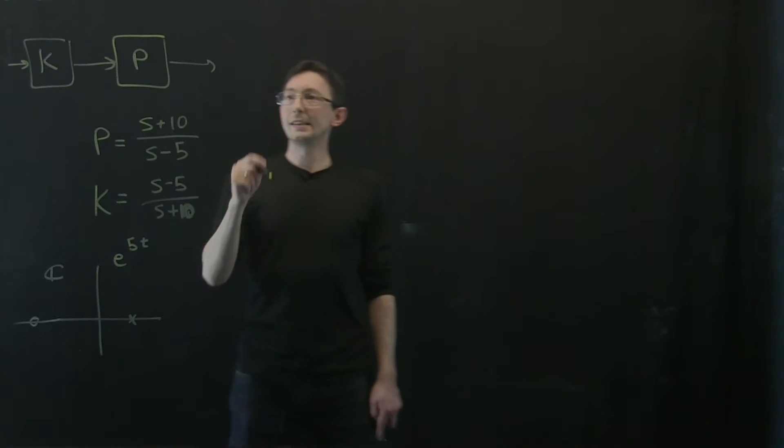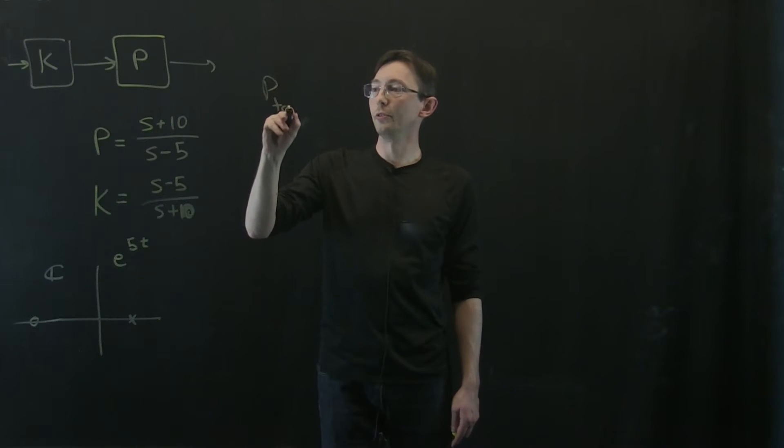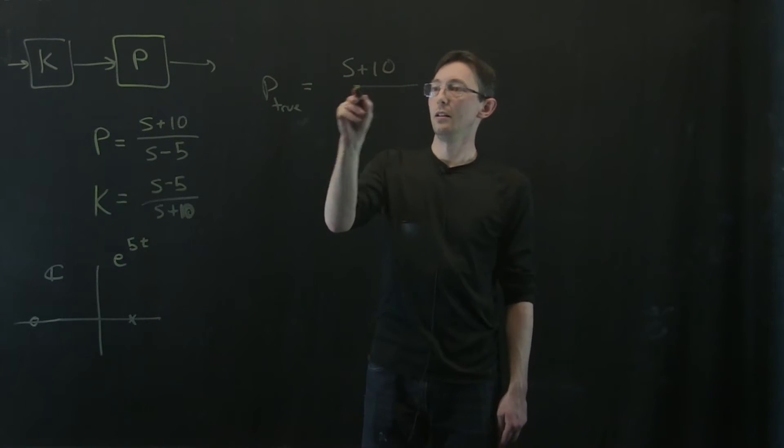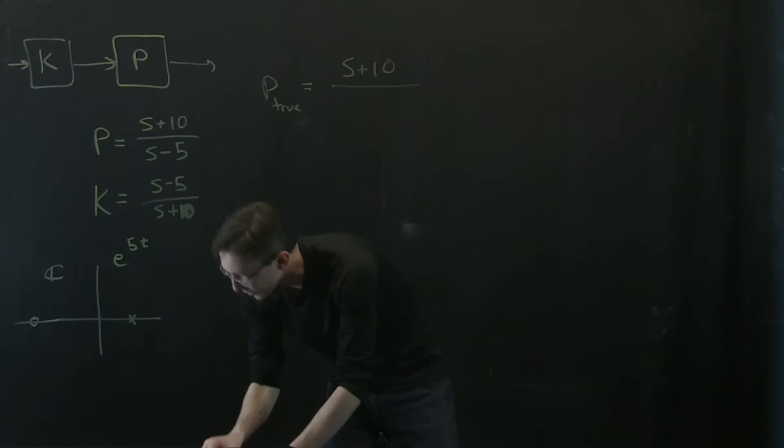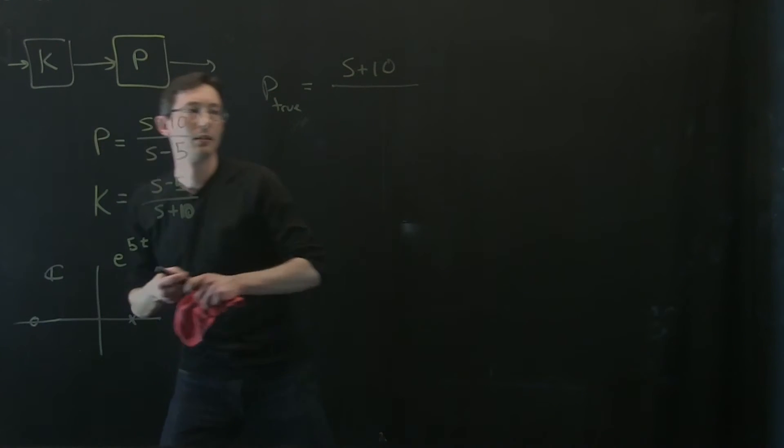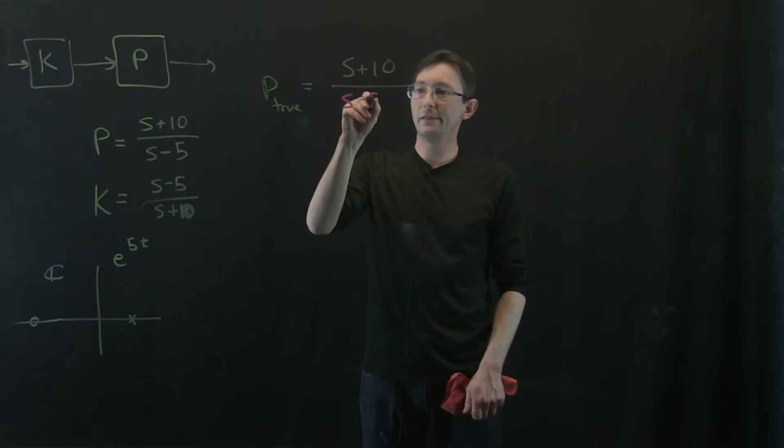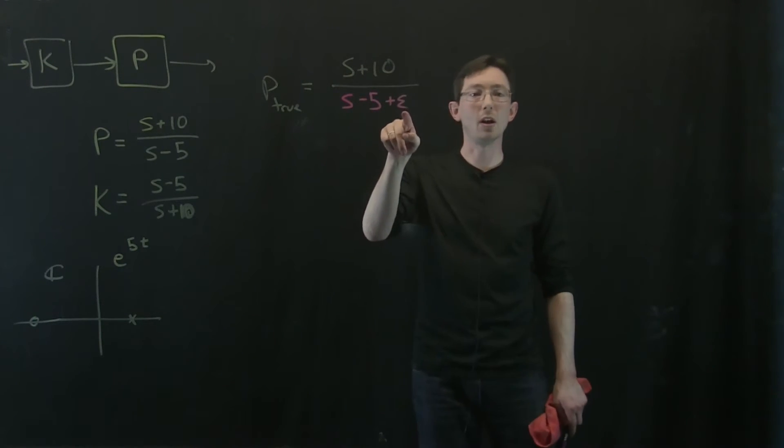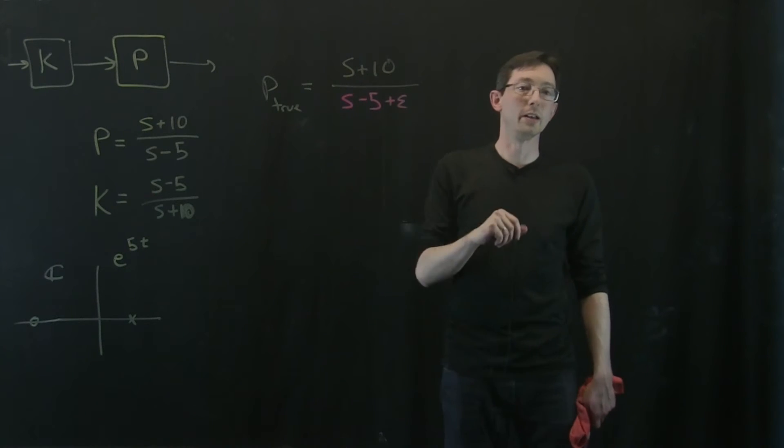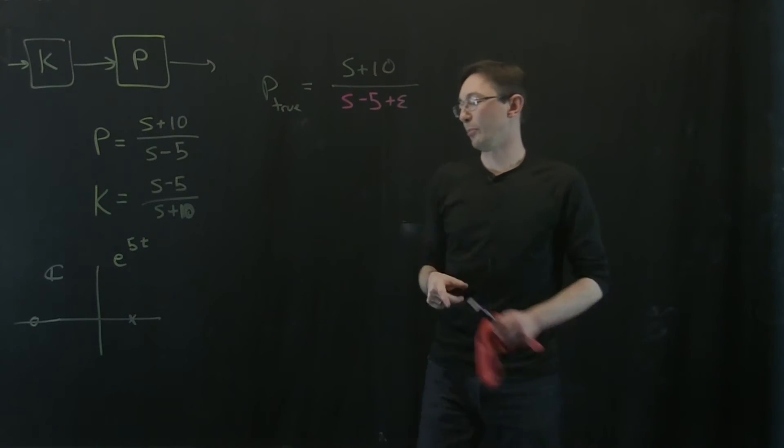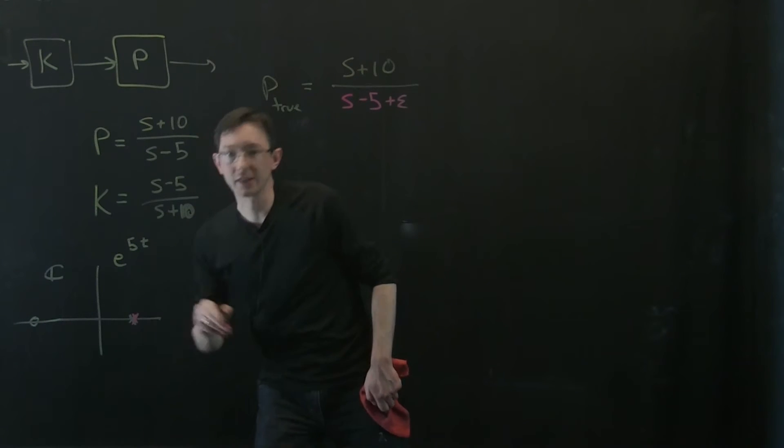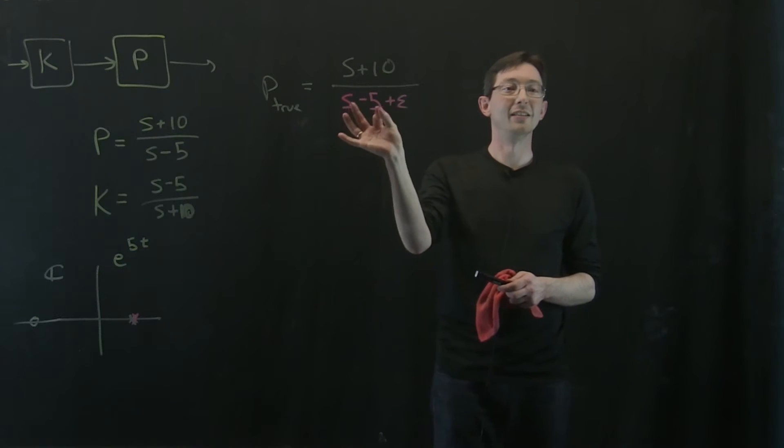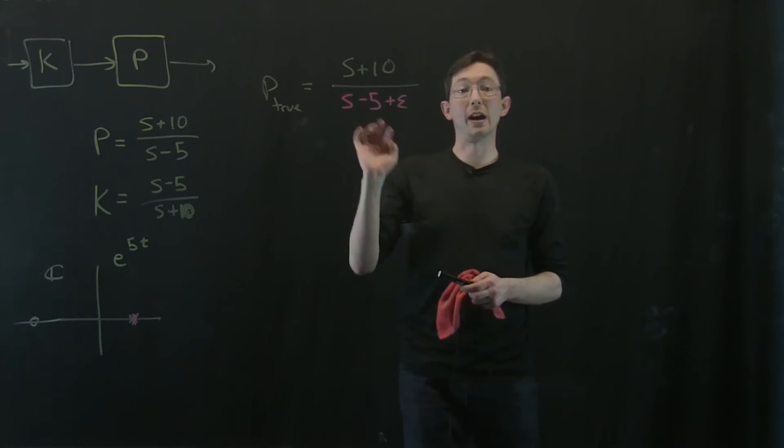This is my model. Let's say that P true equals S plus 10 over S minus 5 plus epsilon. Let's say that I'm 0.00001% off of that pole. So instead of it being here, it's right next to it. I'm a tiny bit off. My true model has an unstable pole a little bit off from where I thought this pole was.